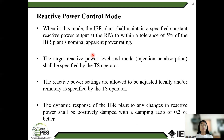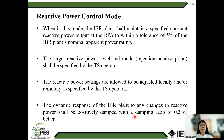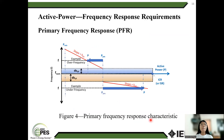Reactive power control mode. When in this mode, the IBR plan should maintain a specified constant reactive power output at the RPA within a tolerance of 5% of the IBR plan's nominated apparent power rating. The target reactive power level and mode should be specified by the TSO. The reactive power settings are allowed to be adjusted locally or remotely as specified by the TSO. The timing response of the IBR plan to any changes in reactive power should be a first-order response with a damping ratio of 0.3 or better.